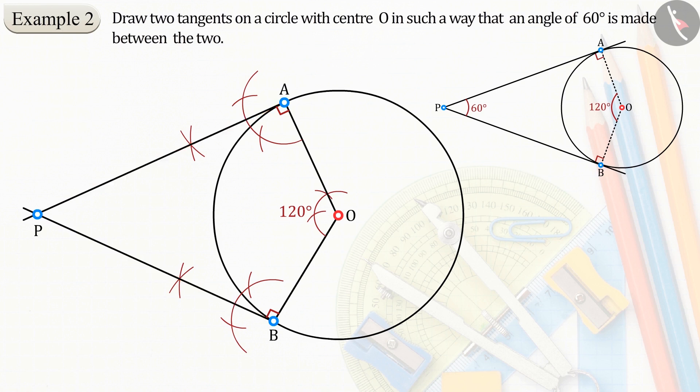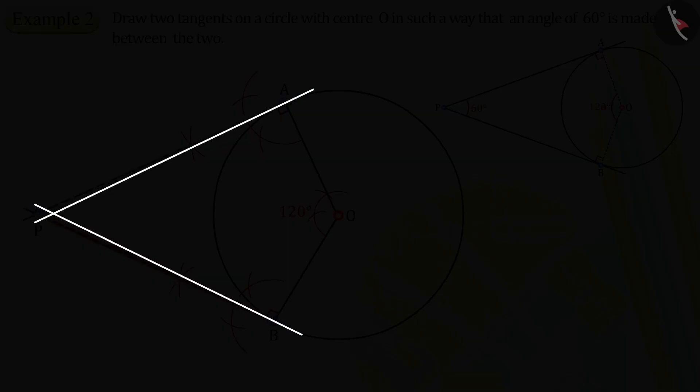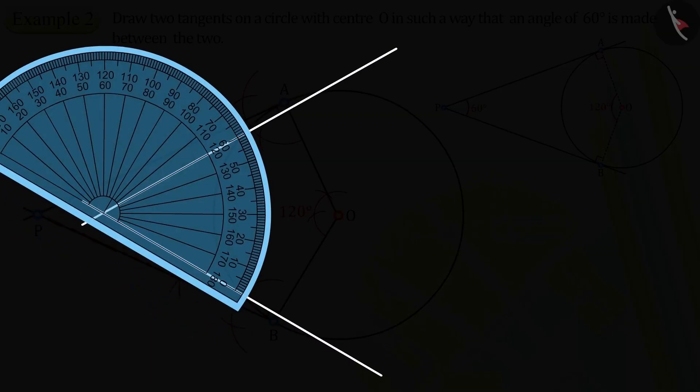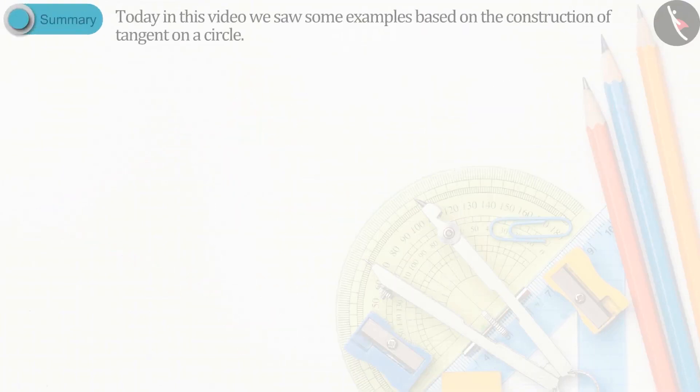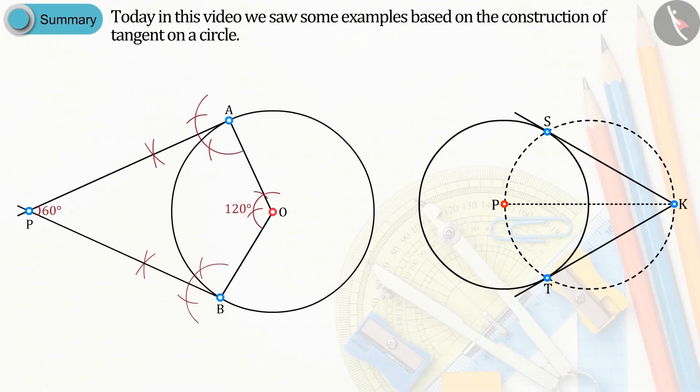On checking, you will find that the angle APB between the tangents PA and PB is 60 degrees. Today in this video, we saw some interesting examples based on the construction of tangent lines on a circle. Hope you have understood very well how to draw tangent lines on a circle.